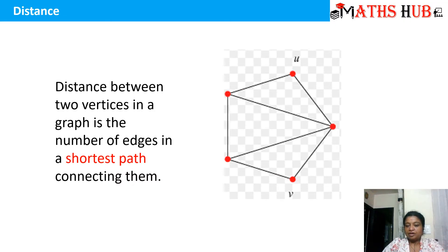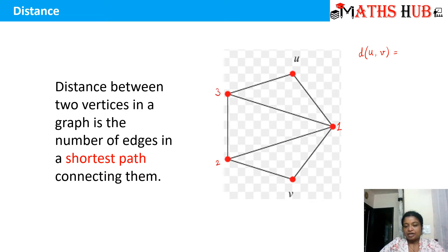Suppose we are given two vertices U and V and we need to calculate the distance between U and V. If we check how many paths connect U to V — let me name the intermediate nodes 1, 2, and 3 — we can go from U to 1 and then from 1 to V. That means there is one path whose length is 2. We can also go from U to 3, then 3 to 1, and then 1 to V, giving another path with length 3.